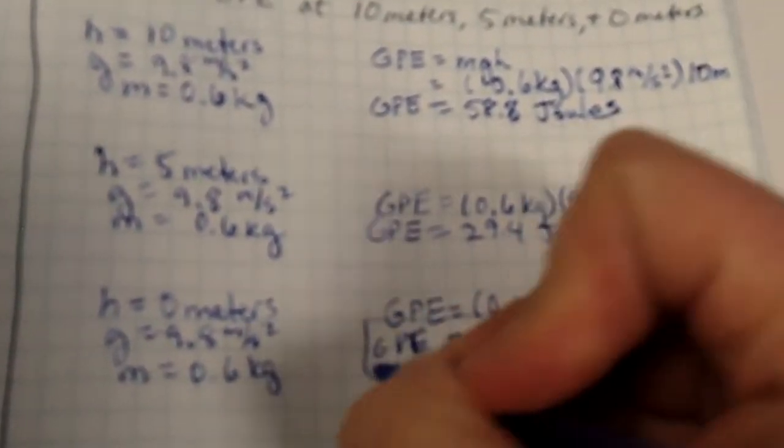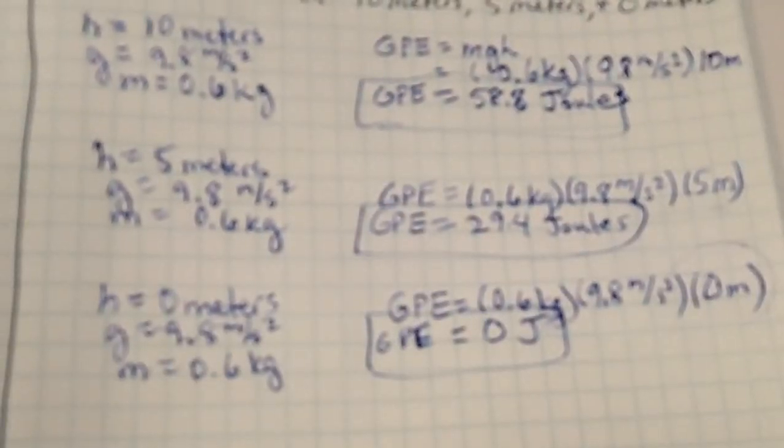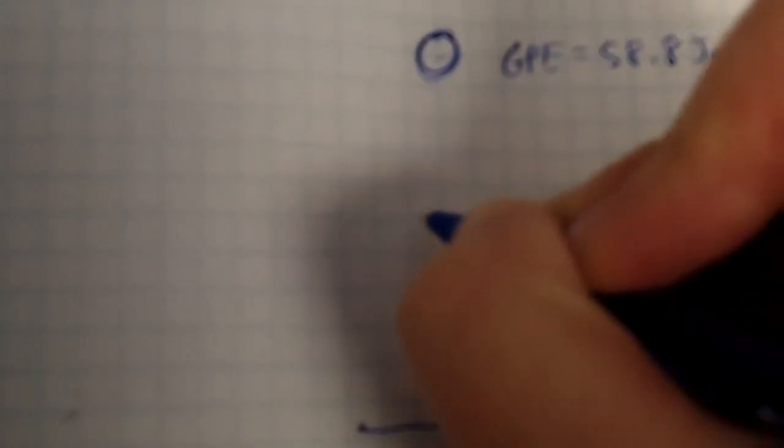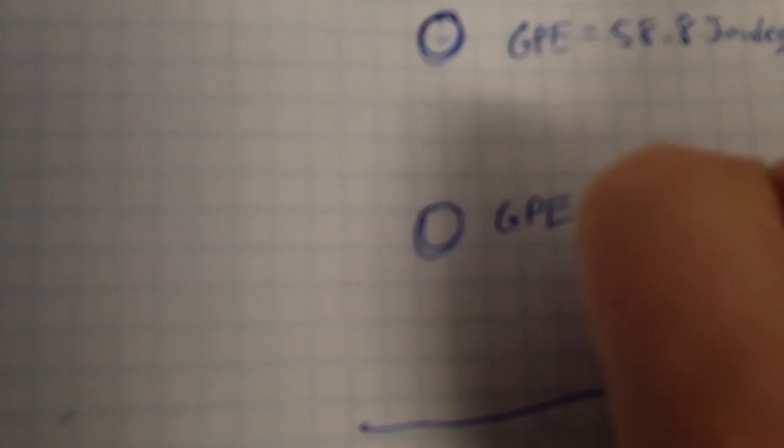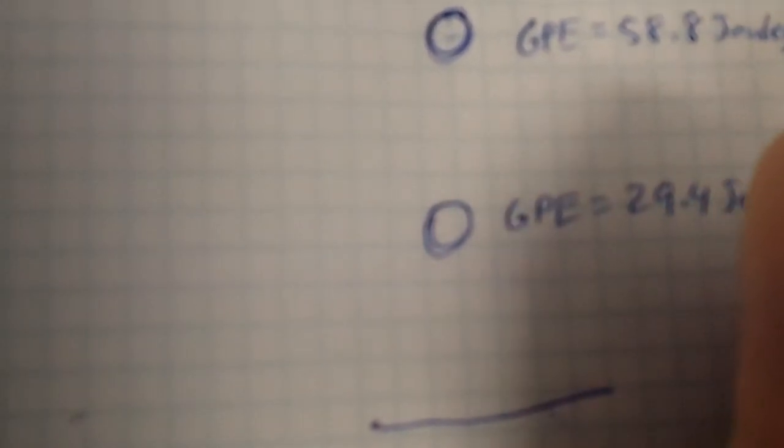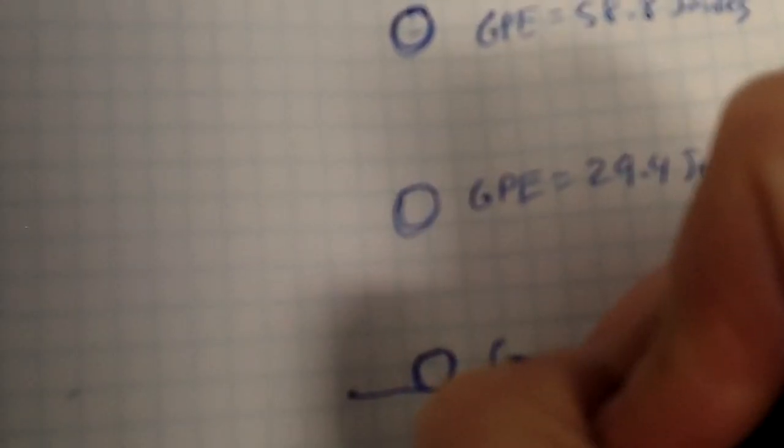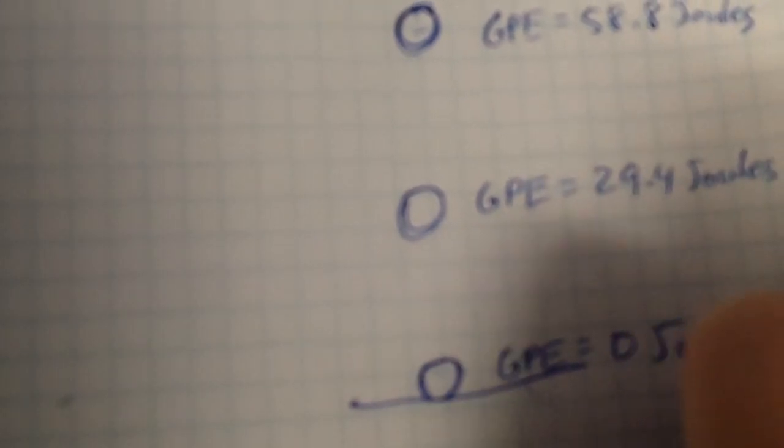If you wanted to draw a picture of this, here's what it would look like. We want to take a look down here and see that we've got the ground. We've got say 1, 2, 3, 4, 5, 6, 7, 8, 9, 10. So our basketball is up here at 10 meters. And the GPE is 58.8 joules. Then we go halfway down. And we have GPE is equal to 29.4 joules. And then of course, our basketball at the very bottom, our GPE is equal to zero joules.